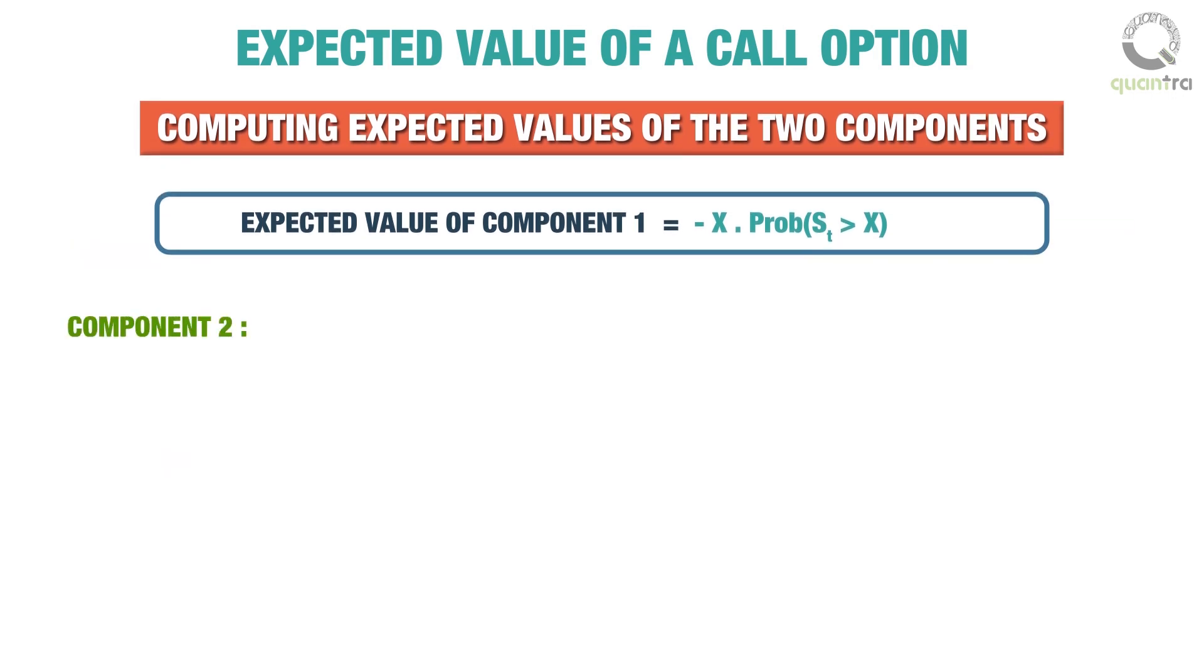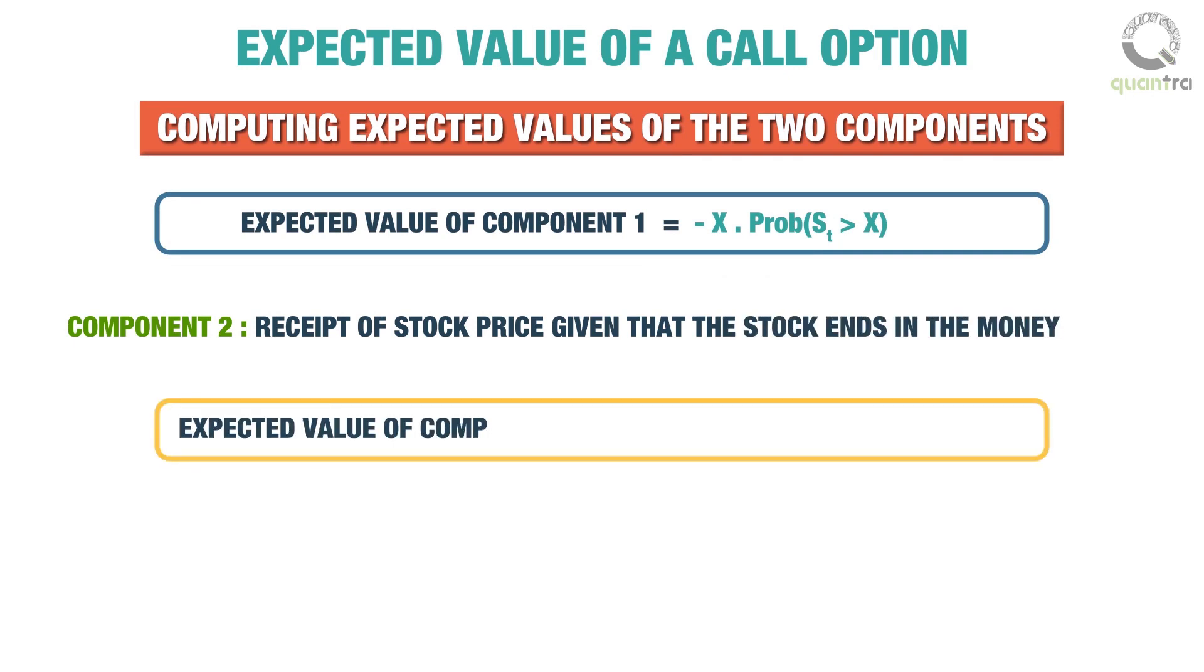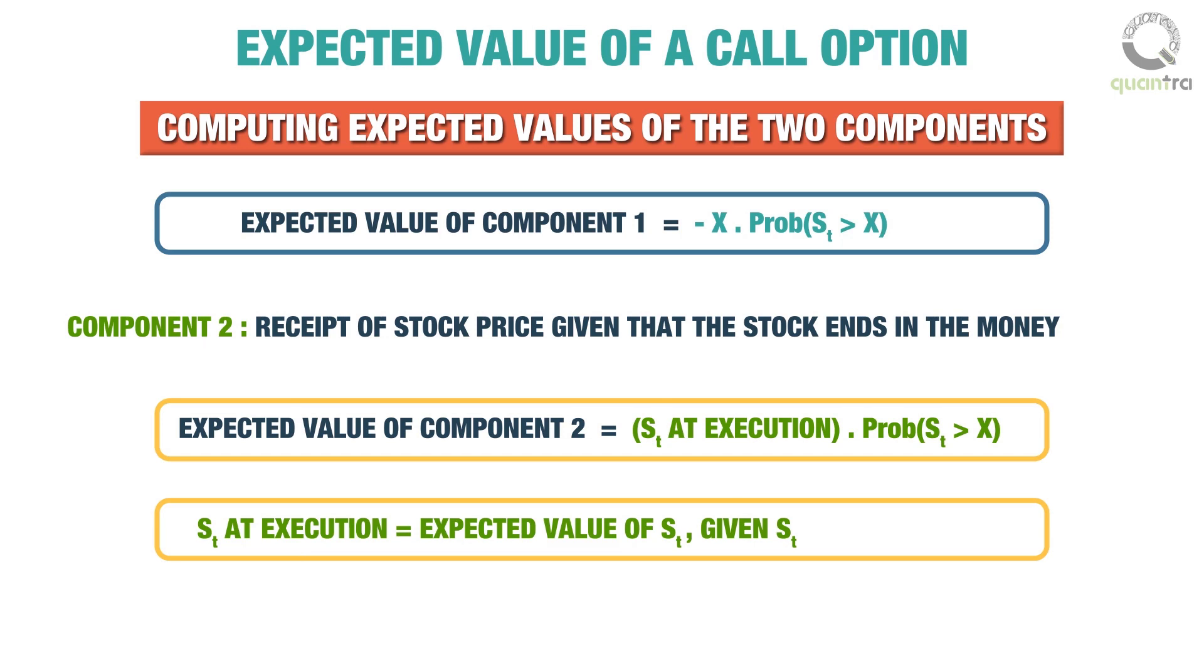The second component is receipt of stock price given that the stock ends in the money. The expected value of this term will be the stock price at the time of execution multiplied by the probability of stock price St being greater than strike price X. Kindly note that the stock price at execution is given by the expected value of St given that St is greater than X.